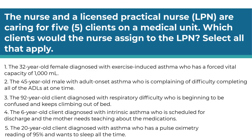The nurse and a licensed practical nurse are caring for five clients on a medical unit. Which clients would the nurse assign to the LPN? Select all that apply. Number one, the 32-year-old female diagnosed with exercise-induced asthma who has a forced vital capacity of 1,000 milliliters. Number two, the 45-year-old male with adult onset asthma complaining of difficulty completing all ADLs at one time. Number three, the 92-year-old client diagnosed with respiratory difficulty who is beginning to be confused and keeps climbing out of bed. Number four, the 6-year-old with intrinsic asthma scheduled for discharge whose mother needs medication teaching. Number five, the 20-year-old with asthma who has a pulse oximetry reading of 95% and wants to sleep all the time.